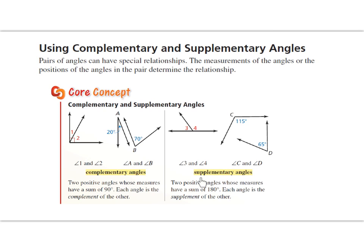Likewise, supplementary angles are two positive angles whose measures have a sum of 180 degrees. Each angle is the supplement of the other. Here are two examples where they add up to be 180 degrees.